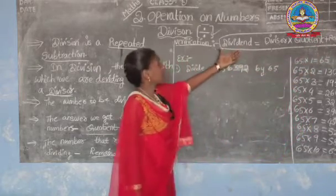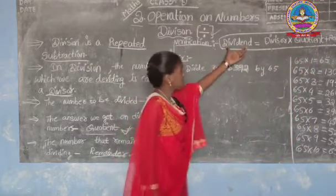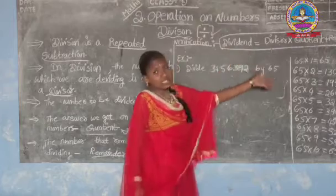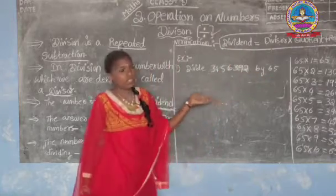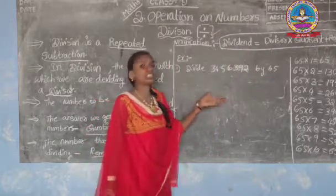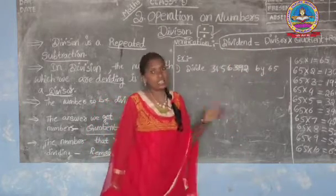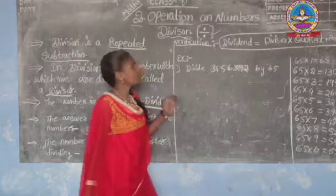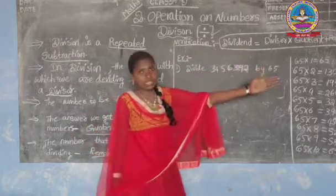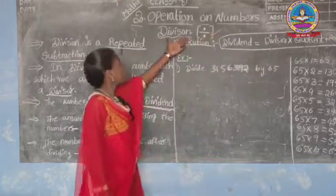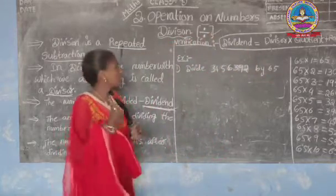We multiply the divisor and quotient, then add the remainder. If we get the dividend, the answer is correct and the division process is correct. This is the verification process in division.